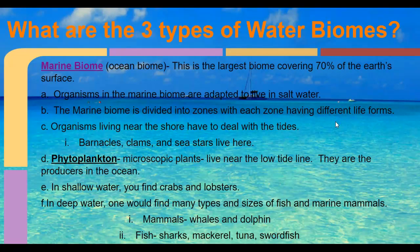Now the three types of water biomes, all referred to under the marine biome — marine literally means salt water. Salt water is generally around 30 to 32 parts per million. Fresh water is zero parts per million, and estuaries are usually around 17 parts per million. The marine saltwater biome is the earth's largest biome.